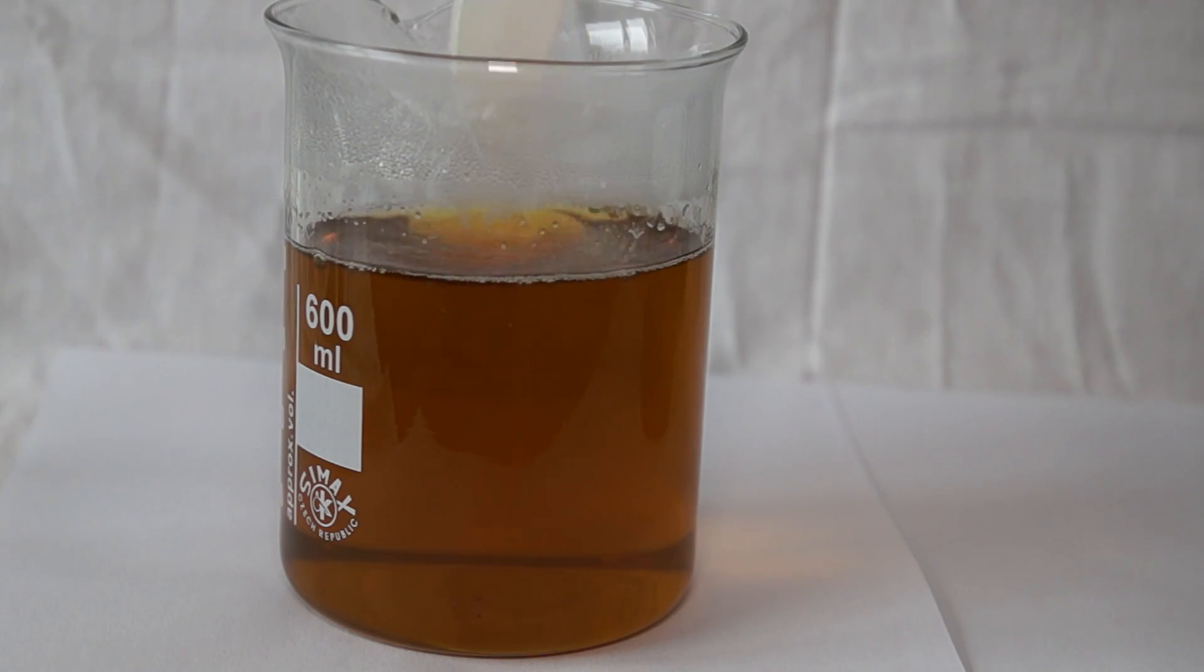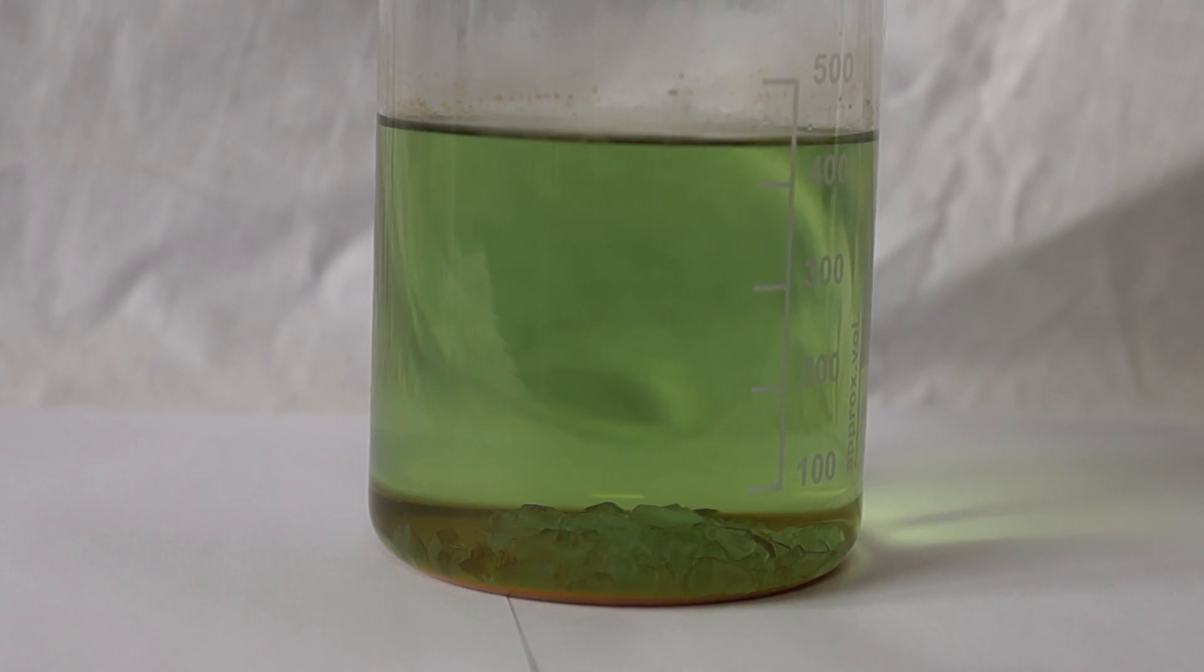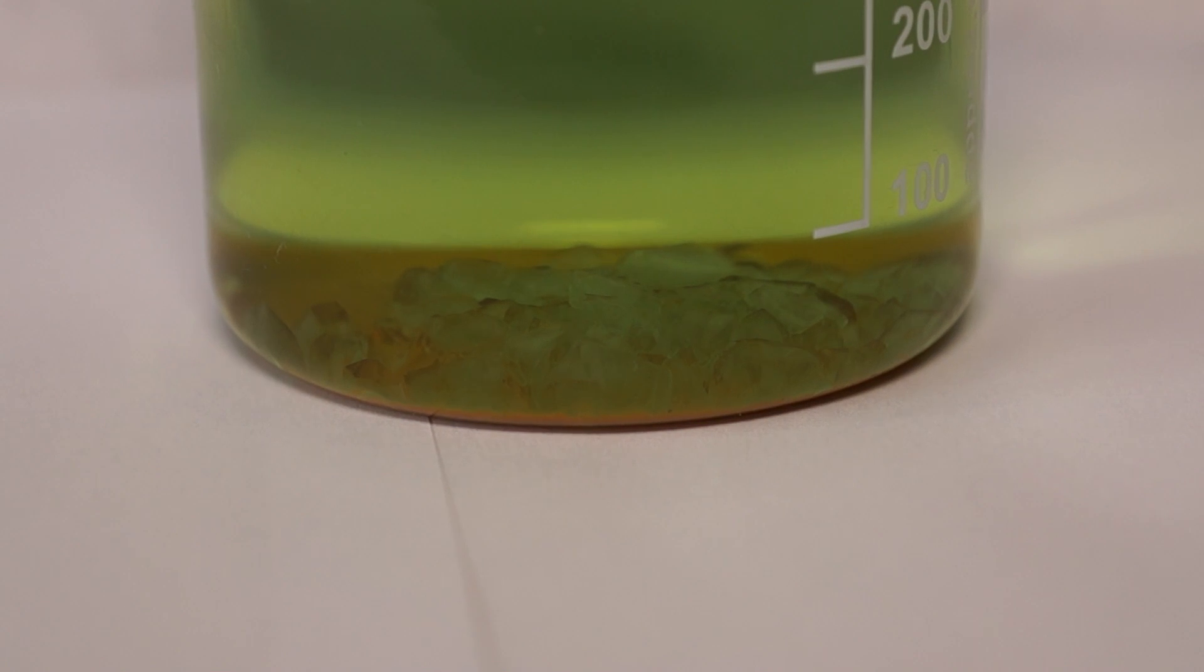A day later we can see that a lot of small green crystals of Mohr's salt have grown on the bottom of the glass. Also, we don't need the iron oxide precipitate that is on the bottom of the glass.